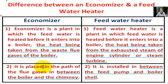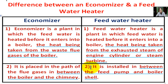Number two: the economizer is placed in the path of the flue gases, in between the boiler and the chimney. Number two, the feed water heater is installed in between the feed pump and the boiler.